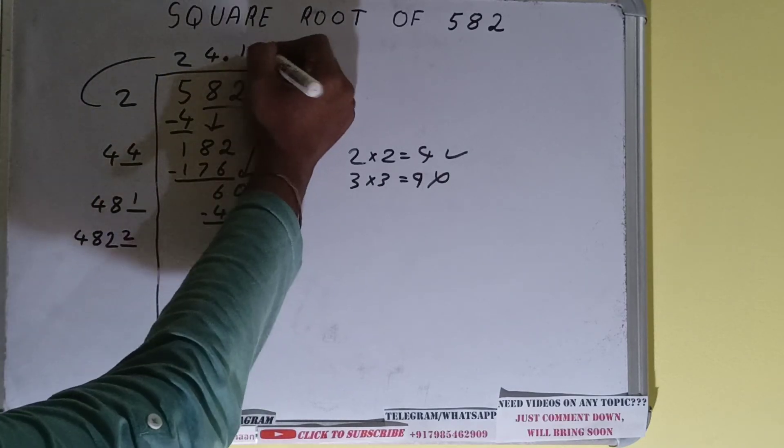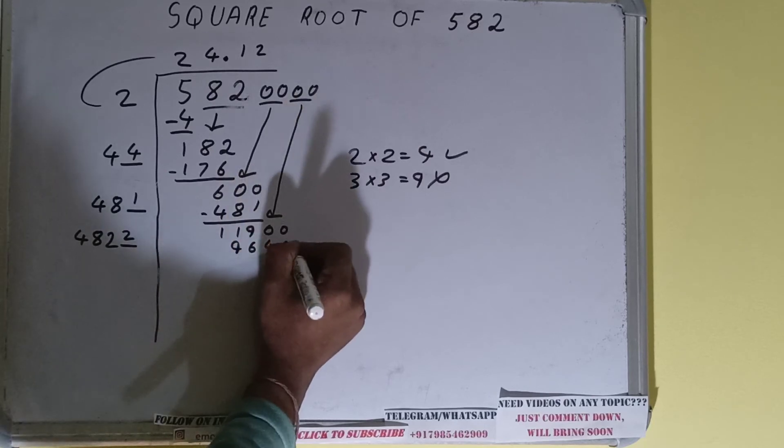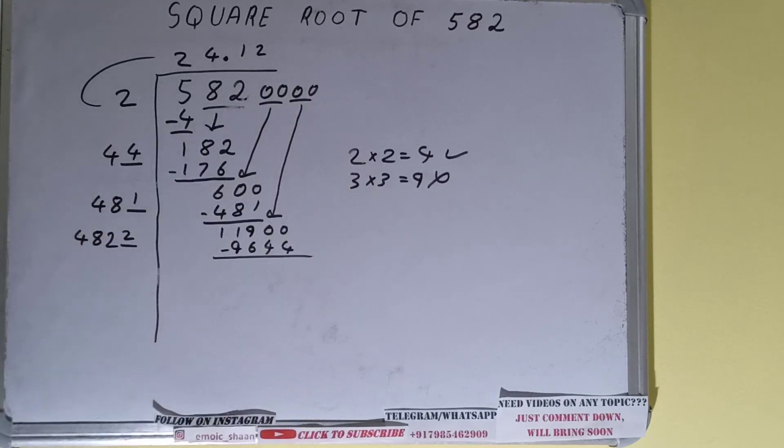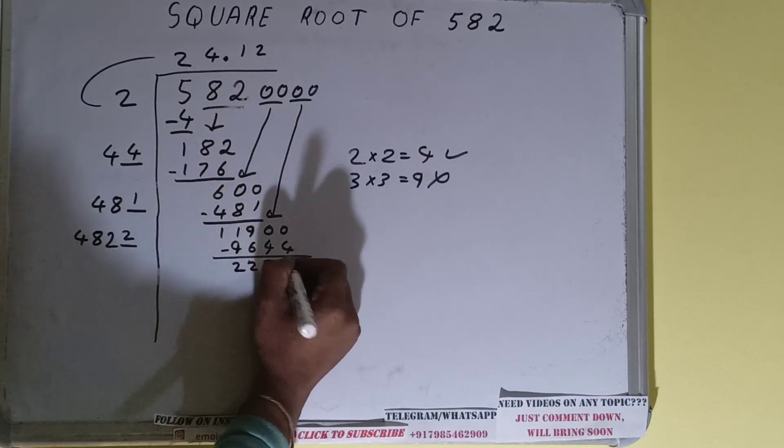2 here and 2 here gives 9644. Subtract it and 2256 will be left.